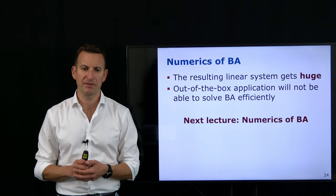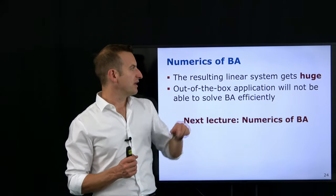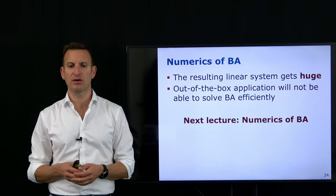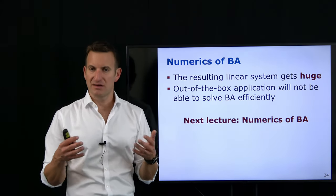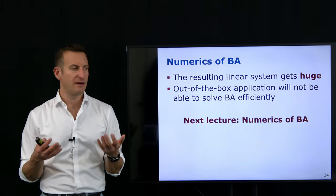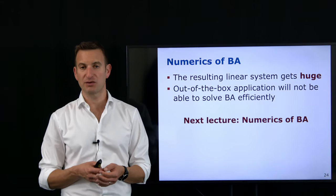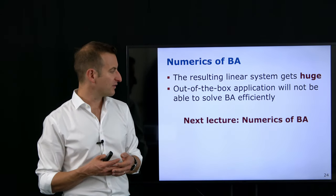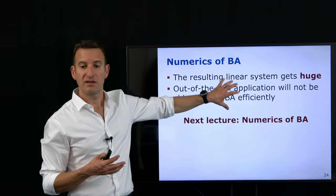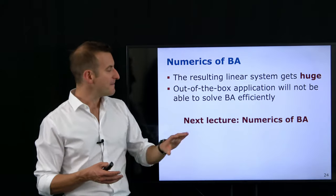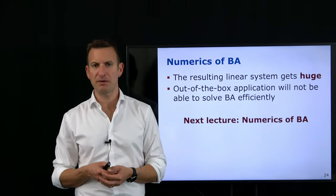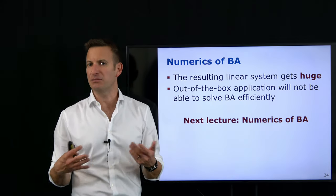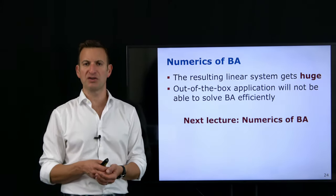Therefore, we need to do a couple of tricks and exploit some properties that bundle adjustment provides, in order to avoid the fact that I can't naively solve my system of linear equations. That's something I'll cover in the next lecture on the numerics of bundle adjustment. For today, we ignore this and assume we can solve this very large system — even though in practice memory is not large enough to even store all the quantities — and will find a way for solving it.